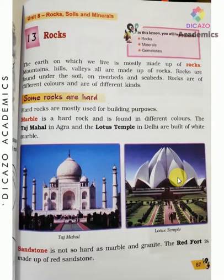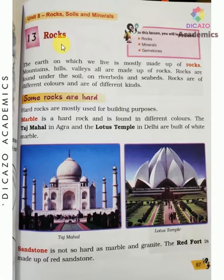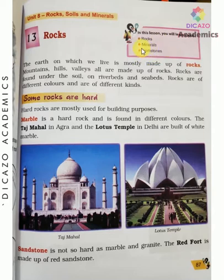Unit 8: Rocks, Soils and Minerals. Chapter number 13: Rocks. In this lesson you will learn about rocks, minerals and gemstones. Let's start. The earth on which we live is mostly made up of rocks.